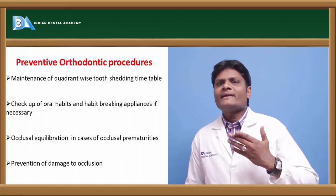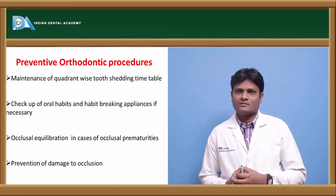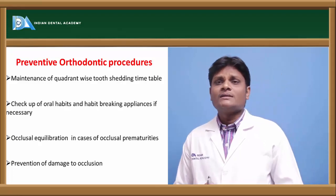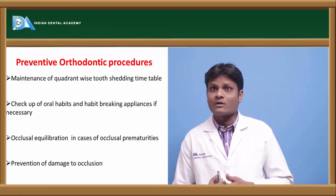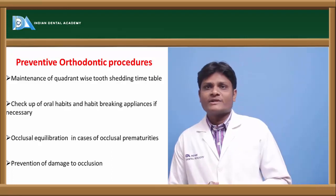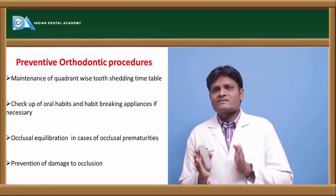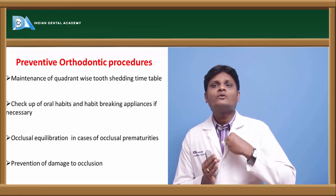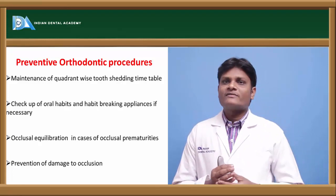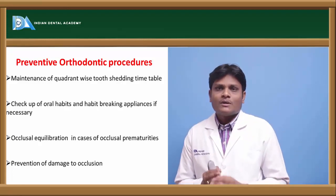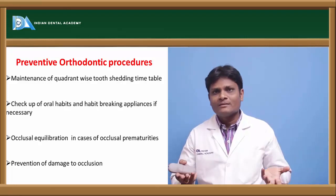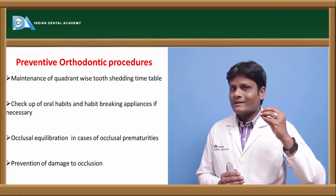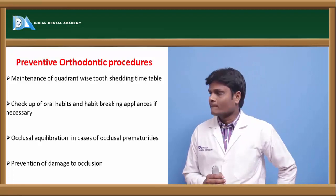We need to maintain a quadrant-wise shedding timetable for every patient. If a particular tooth is not shed at its scheduled shedding time, we need to evaluate whether the underlying permanent tooth is present and then carefully remove the deciduous tooth to facilitate eruption of the underlying permanent tooth. If shedding is occurring according to schedule, there is no problem. We should make note of the appropriate shedding schedule of deciduous teeth for each individual in a quadrant-wise manner.